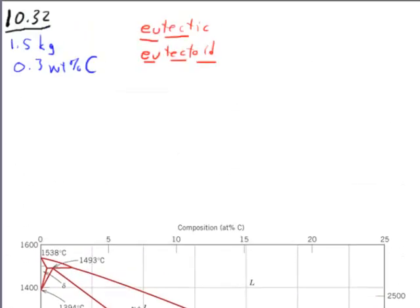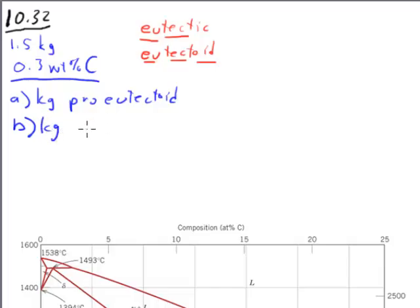So we look at what is being asked. In this case, we are asked for A, how many kilograms of pro-eutectoid phase. B, how many kilograms of eutectoid ferrite. And C, how many kilograms of cementite.